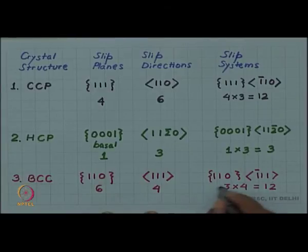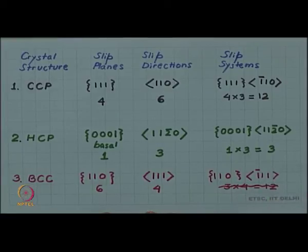There are {110} 6 such planes and in each plane there are only two directions. So I should write it as 6 into 2, 12 slip system.